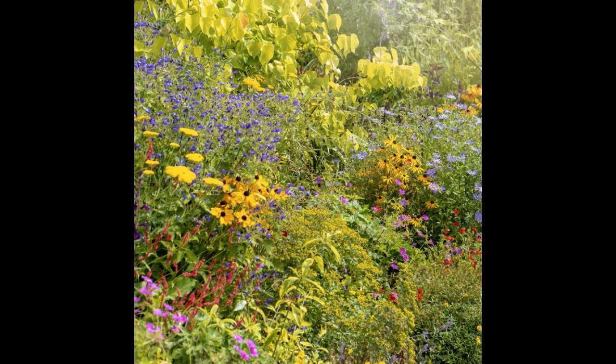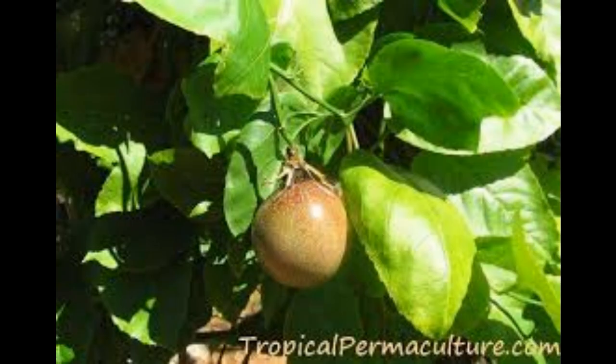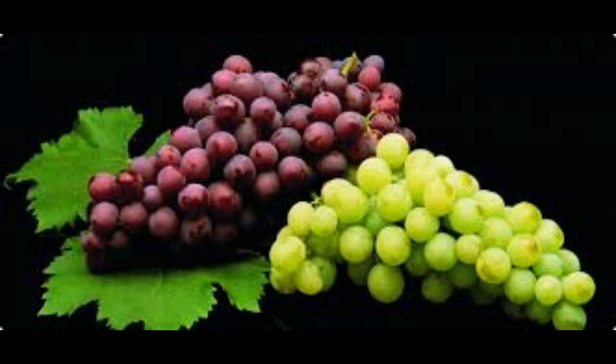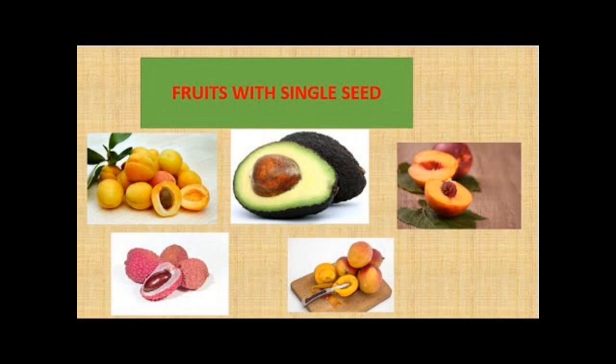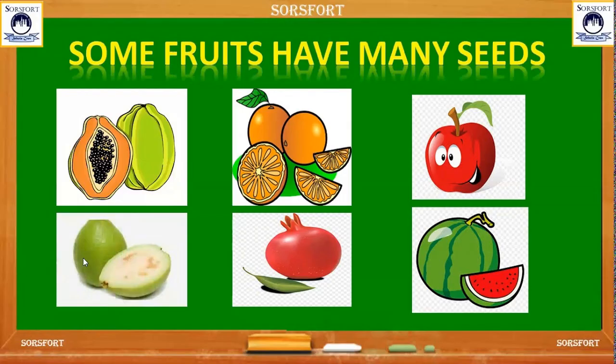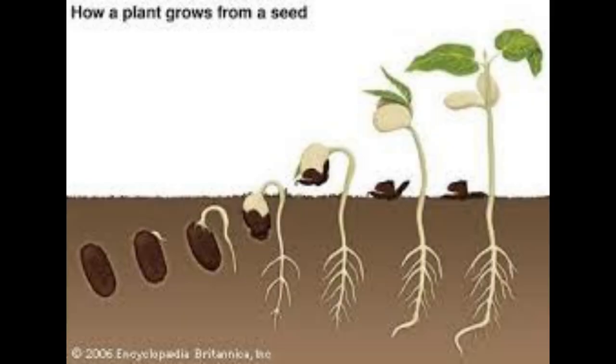Why do plants produce a large number of seeds? When we observe the fruits and vegetables which grow in our garden, we can see them producing a large number of seeds. Some fruits grow singly whereas some grow in bunches. Some fruits have a single seed while some other fruits have many seeds. All these seeds of a fruit should be able to germinate to produce new plants.